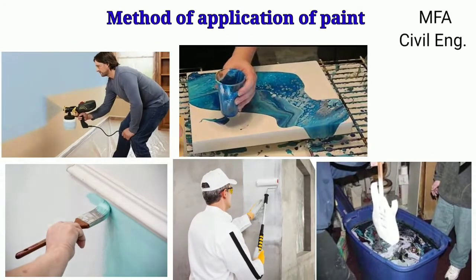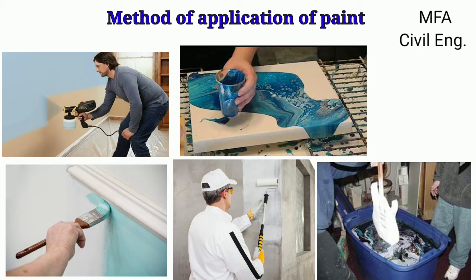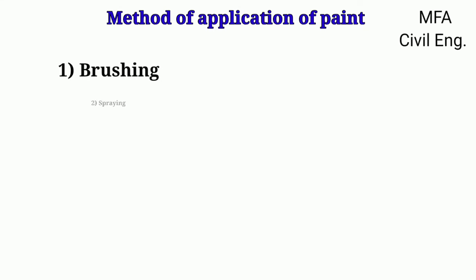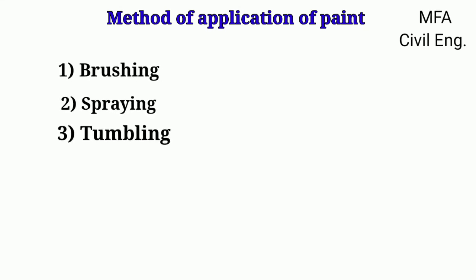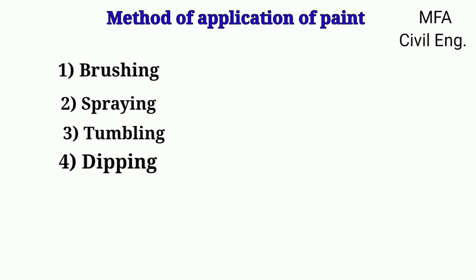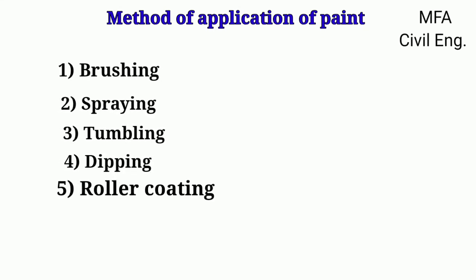Paint can be applied to the required surface by many methods. The important methods commonly used for painting work are brushing, spraying, tumbling, dipping, and roller coating.